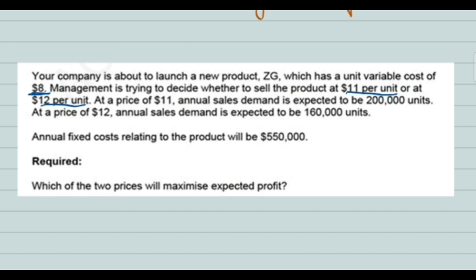At a price of $11 per unit, annual sales demand is expected to be 200,000 units. At a price of $12 per unit, annual sales demand is expected to be 160,000 units. Annual fixed cost is $550,000. The question asks: which of the two prices will maximize expected profit?